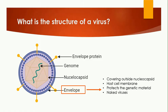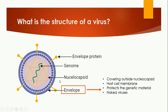Another part of the virus structure is the envelope. The envelope is the outer covering, and it is actually taken from the host cell membrane — meaning the virus uses the host cell membrane to protect its nucleocapsid. If a virus does not contain any envelope, it is known as a naked virus. The purpose of the envelope is to protect the genetic material and the nucleocapsid.